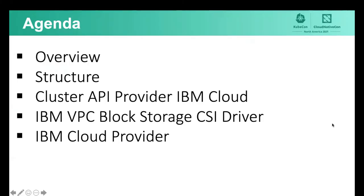I will provide an overview and the activities structure of the project, and then we will do a deep dive into the three main repositories. Actually, it's four repositories, but the three main repositories for cluster API provider IBM cloud, there is one for VPC block storage, and then we have two under IBM cloud provider.